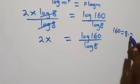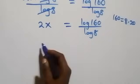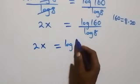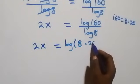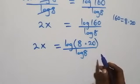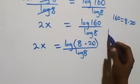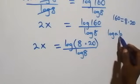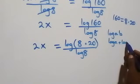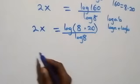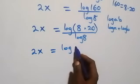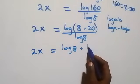Then the next step: let's express 160 as 8 times 20. That is, from here we have 2x equals to log of 8 times 20, then over log 8. From here, applying the law of logarithms: when we have log a times b, it is the same thing as log a plus log b. That is, here this becomes 2x equals to log 8 plus log 20.